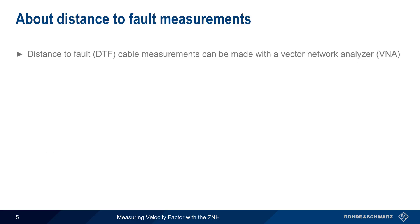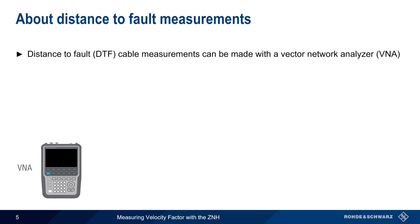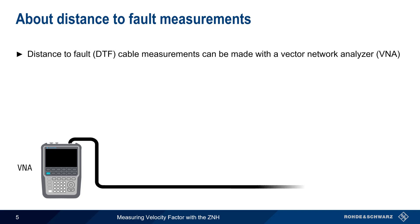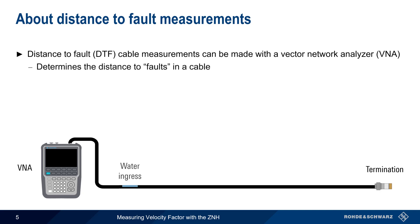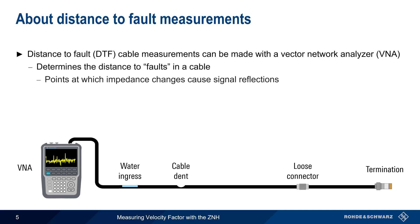One common method for measuring velocity factor is using a Vector Network Analyzer, or VNA, to make a so-called distance-to-fault measurement. In DTF, the VNA sends signals into a cable to determine the distance to faults, which are points along the cable at which the impedance changes and causes signal reflections.